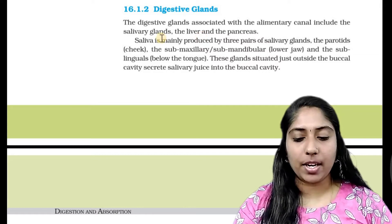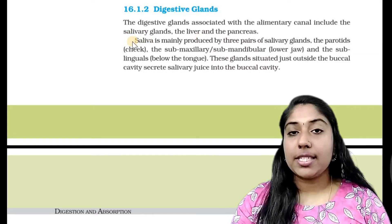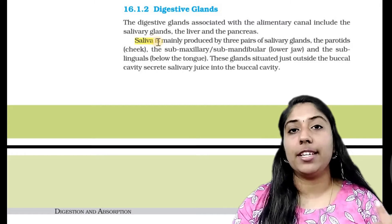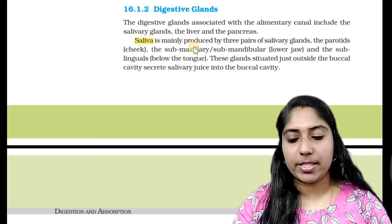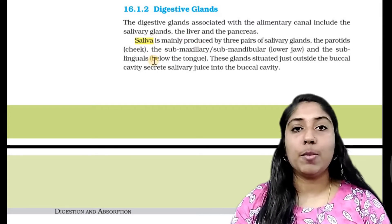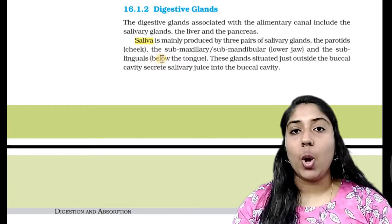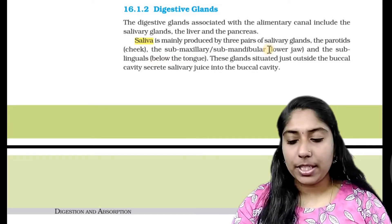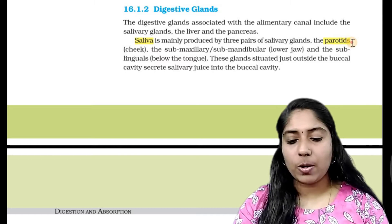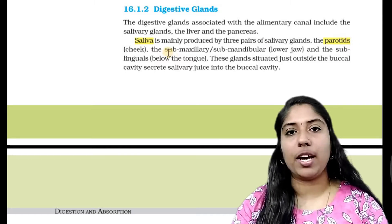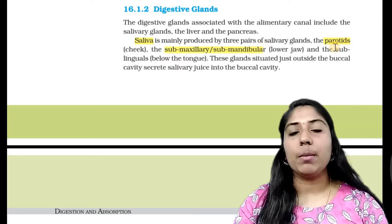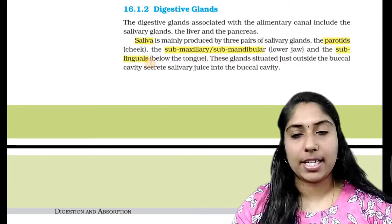The salivary glands. One is the parotid gland. The second is the submandibular, and the third is the sublingual. These three glands are called salivary glands.